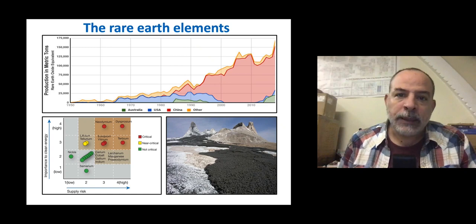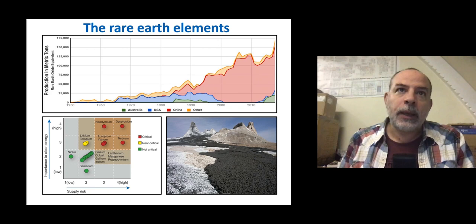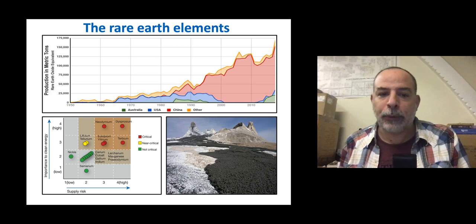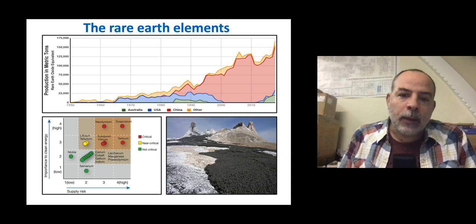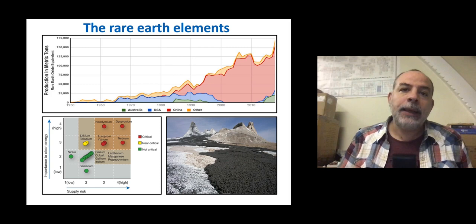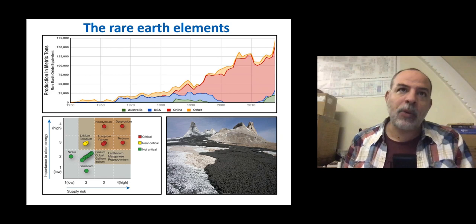Rare earth elements have an important geopolitical component. Most of them are extracted from China, and some are at risk of supply. In a few decades, there could be some risk of supply of some of the heavier rare earth elements, like dysprosium or terbium. The problem is that we don't understand how these rare earth elements are concentrated in minerals, and there is only one active deposit in the world — a natrocarbonatite in Tanzania — which does not contain high concentrations of rare earths.